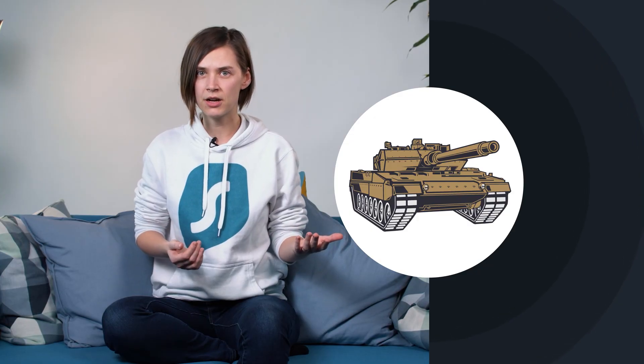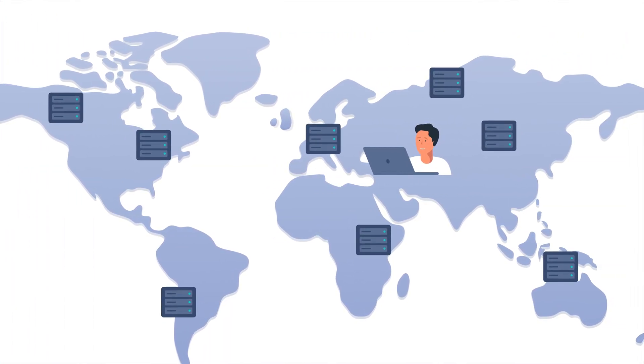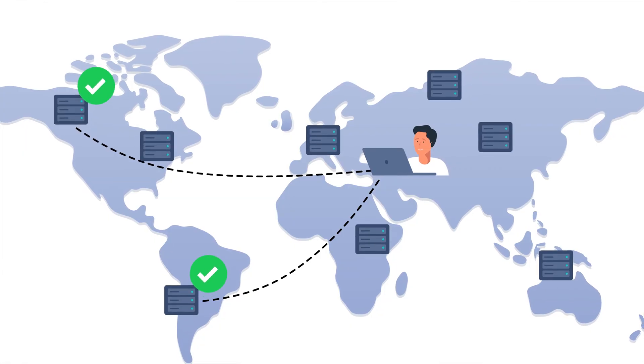OpenVPN protocol is widely known for its high security. The only downside is that it's a little bit slower than the others. It's like a tank — it might not be blazing fast, but it's strong, secure, and will get you where you're going. This protocol works best when you're connected to a server that is far away from your actual location. It's a popular choice amongst desktop users, but it's probably not the best choice if you have an older device.